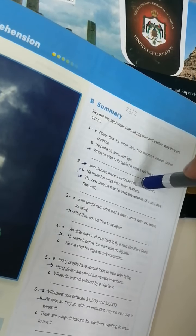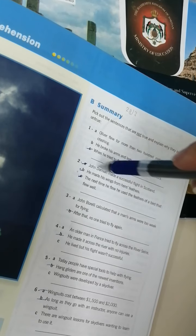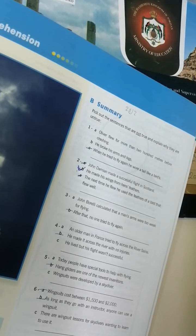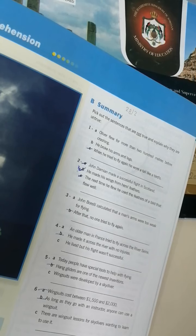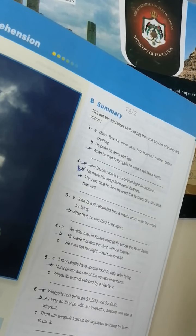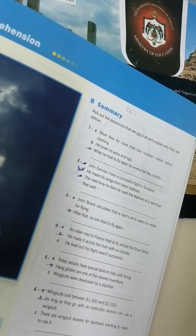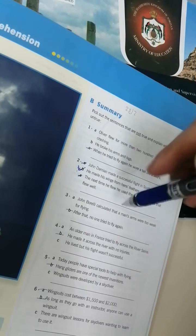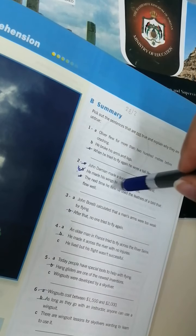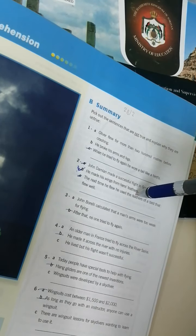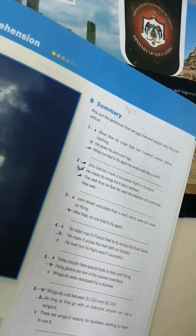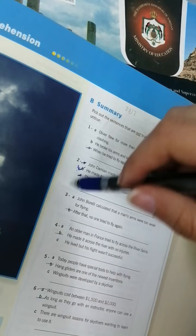Two: John Damon made a successful flight in Scotland. غلط معناته A غلط. He made his wings from his feather. B هي صح من ريش الدجاج صح. The next time he flew he used the feathers of a bird that flew well. الوقت التاني اللي يعني عمل استخدم ريش من الطيور اللي كانت يطير يعني بتشكل جيد. معناته A و C غلط.